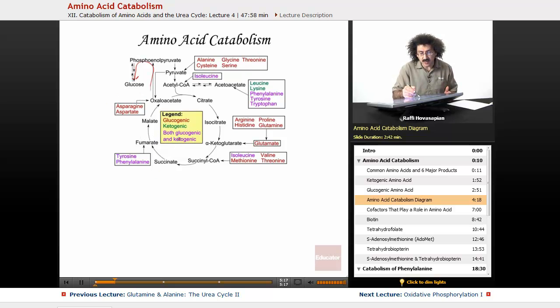Notice the ones in purple. I'm sorry, the ones in green, those are strictly ketogenic. So the leucine and the lysine are strictly ketogenic. When they break down, they break down to acetoacetate, acetyl-CoA. And then they will go on to form their, they'll go on to form ketone bodies. So these are the ones that are strictly ketogenic.